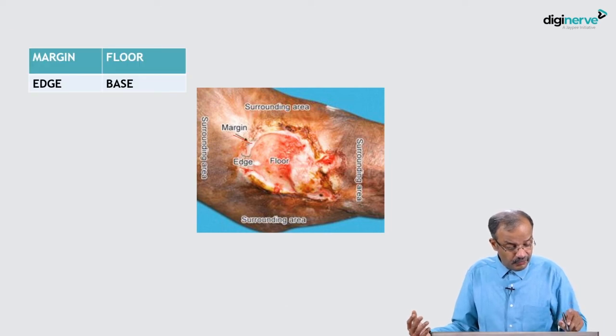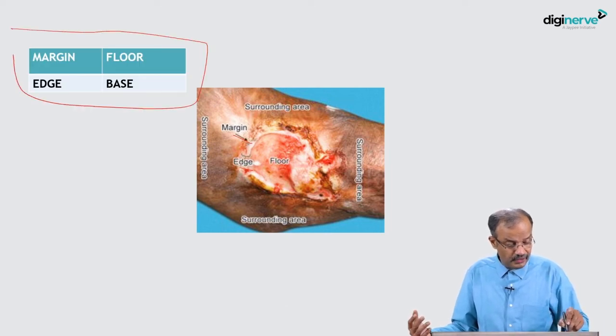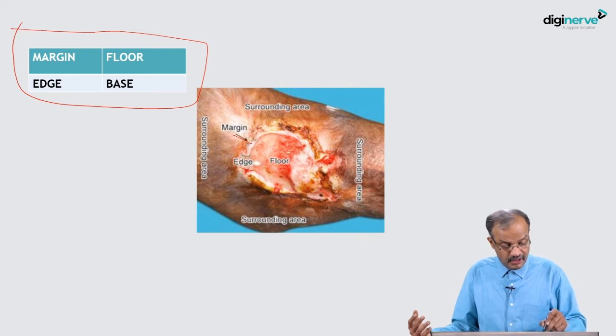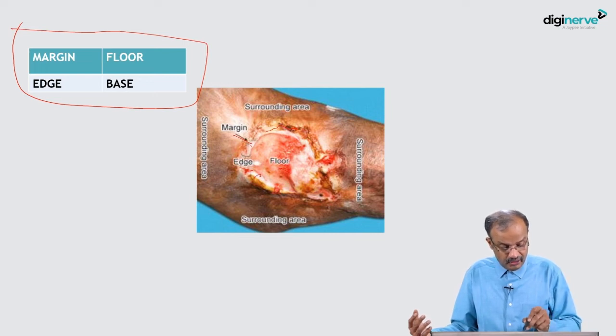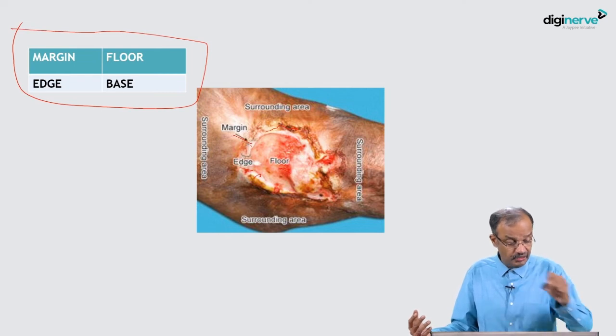These are the four components of an ulcer: margin, floor, edge, and base. You can see that in the patient - this is the margin, this is the floor, this is the edge, this is the surrounding area all around. Base is underneath and cannot be shown in a given patient - it is felt. Diagrammatically you can see the base, but in a patient you cannot.